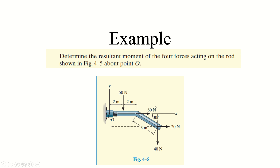Now we'll solve an example to understand how to calculate the moment of a force about point O. In this example, we are asked to determine the resultant moment of four forces acting on the rod shown. The four forces are: 50 N, 60 N, 20 N, and 40 N. We will examine each force individually and calculate the perpendicular distance it has from point O.